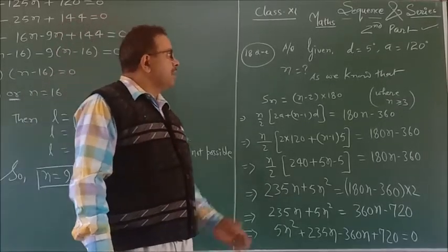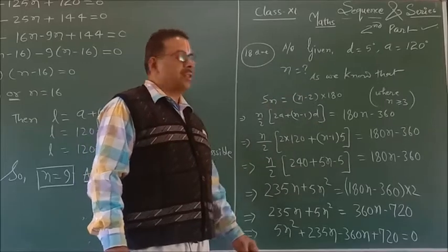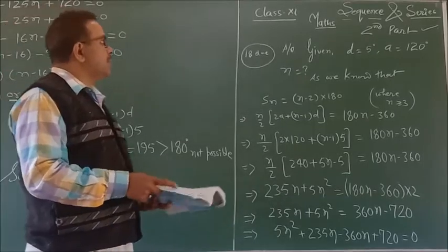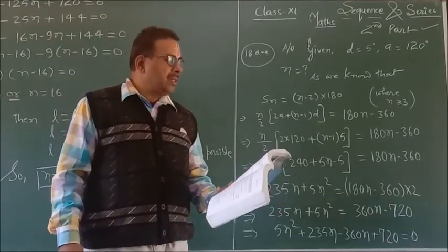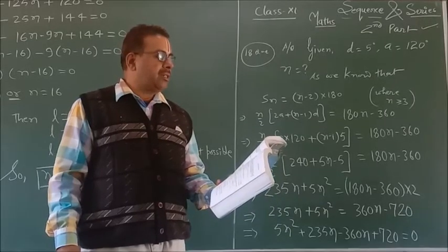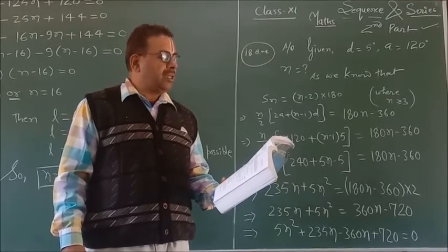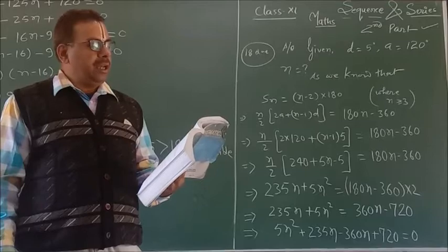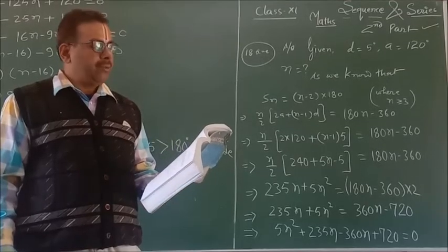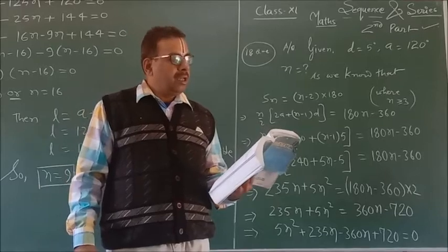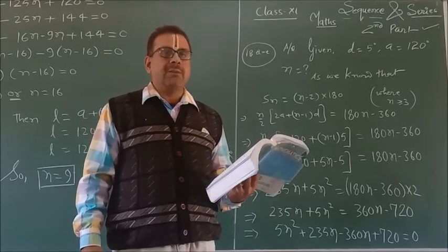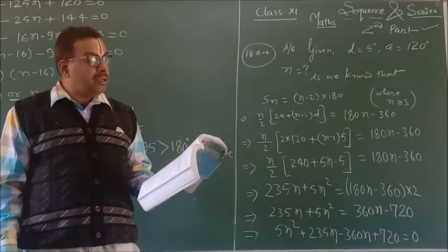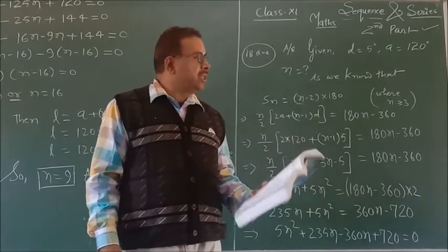Hello friends, today we will learn about the properties of geometric progression. First, let's see the last and second last questions of Exercise 9.2. The second last question says: a man starts repaying a loan with a first installment of Rs. 100, increasing the installment by Rs. 5 every month. What amount will he pay in the 13th installment?